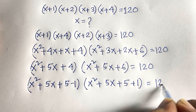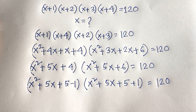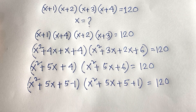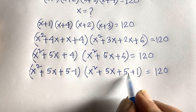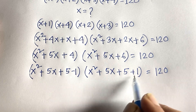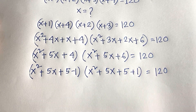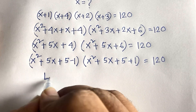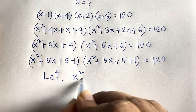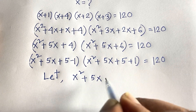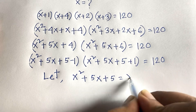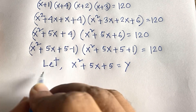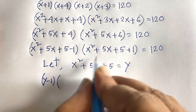I use the identity (a - b)(a + b) = a² - b². Here a = x² + 5x + 5 and b = 1. So I let y = x² + 5x + 5. The equation then becomes (y - 1)(y + 1) = 120.